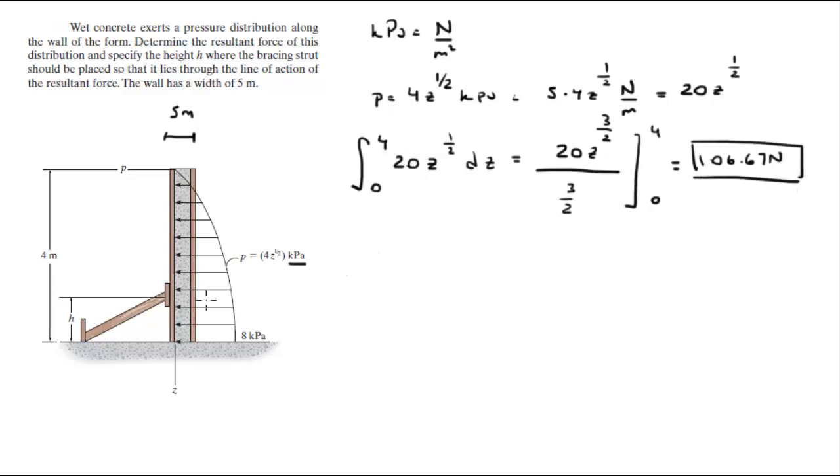To find the line of action where this happens, first you're going to find this line of action. Let's call it z bar, where this equivalent force is being applied.